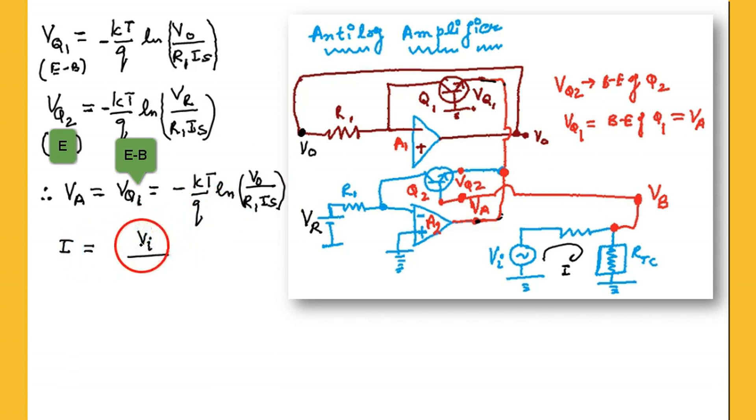So now we find the current flowing because of the input voltage through the loop, which is containing R2 and RTC. So that current is equal to the input voltage divided by the resistance, which is R2 plus RTC. There is a current, and how much that current makes the voltage across RTC, now we find that.